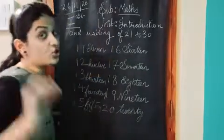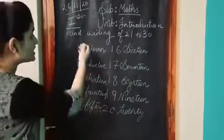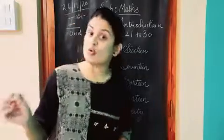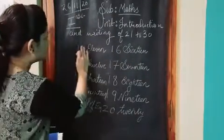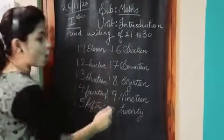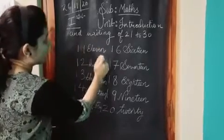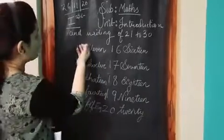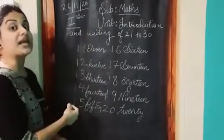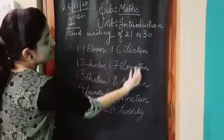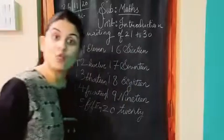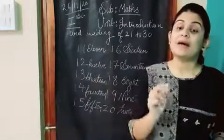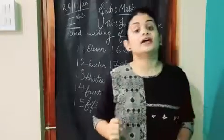Toh baccho, jaise ki aap dekh sakte ho, is side mein humne numbers likhe hain 11 se 20 tak. So these numbers are in the form of figures, aur side mein humne inki spelling likhi hai. On this side numbers are written in figures, and on this side numbers are written in words. Same, yahi maine aapko Combined Book Number 2 se padhaya tha.